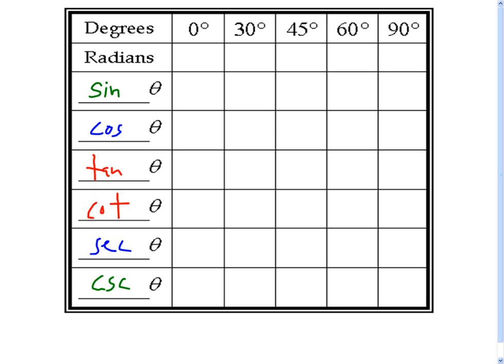The radian measurements are going to be found by dividing our degrees into 180. We know halfway around the circle is 180 degrees and also π radians. 0 degrees is also 0 radians. 30 degrees, 30 goes into 180 six times, so π/6. 45 goes into 180 four times, so π/4 radians. 60 goes into 180 three times. And finally, 90 goes into 180 twice. So one quarter rotation is 90 degrees or π/2 radians.